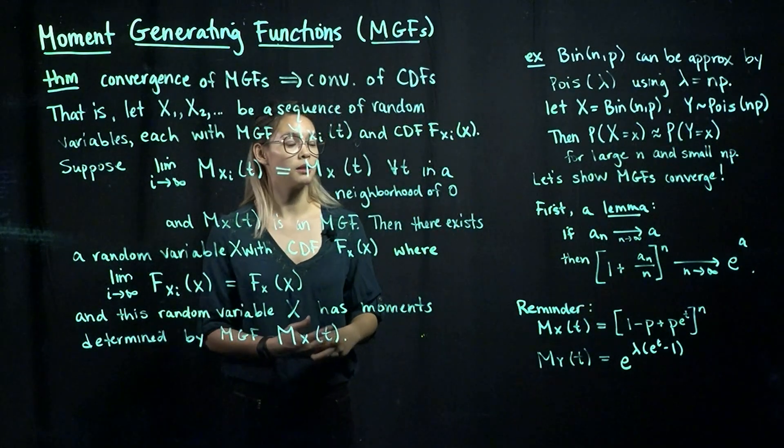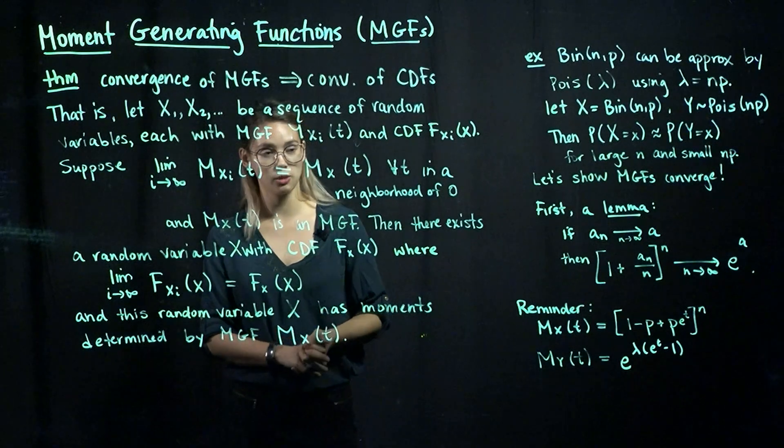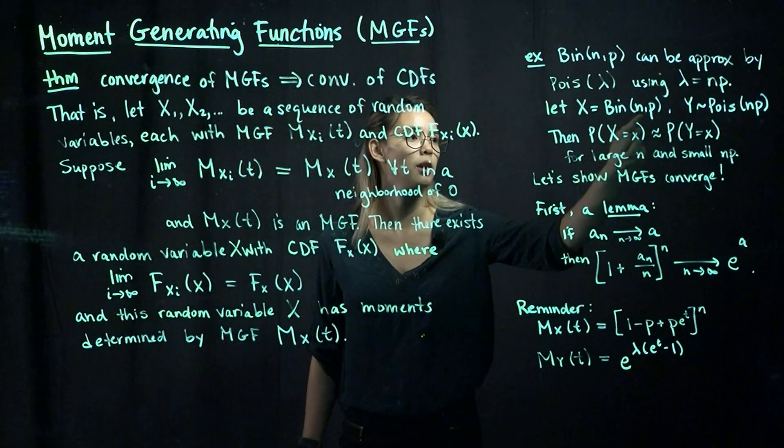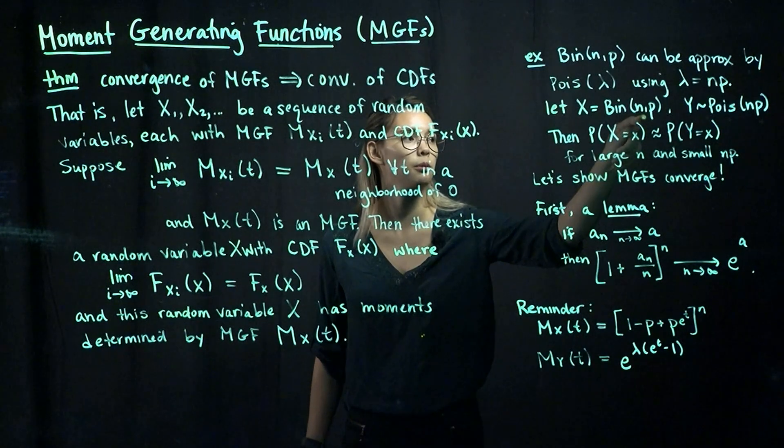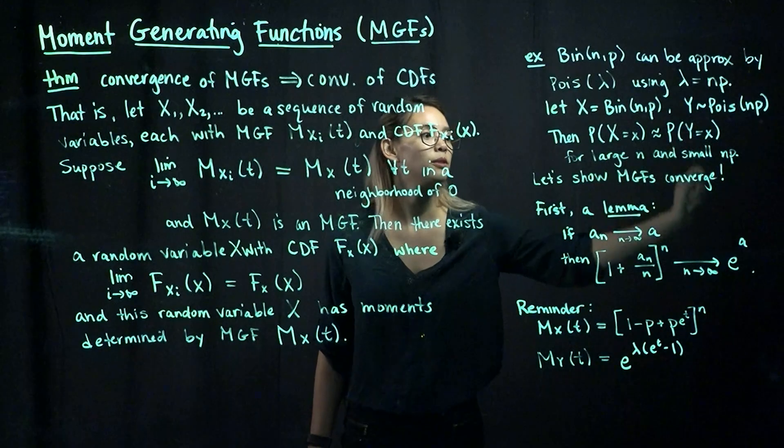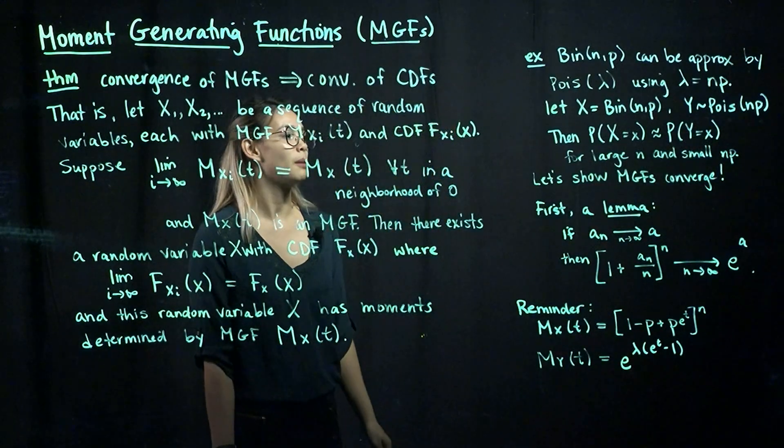Let's see this by showing that the MGFs converge. In other words, we're going to show the MGF of our binomial distributed random variable is going to converge to the MGF for a Poisson.